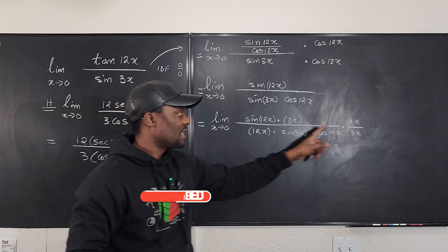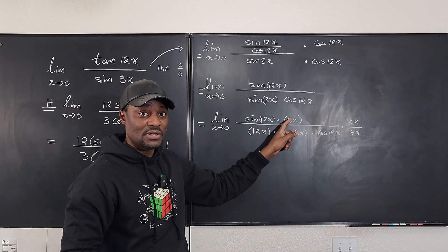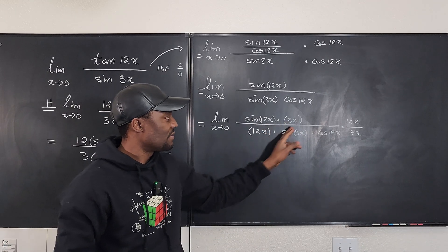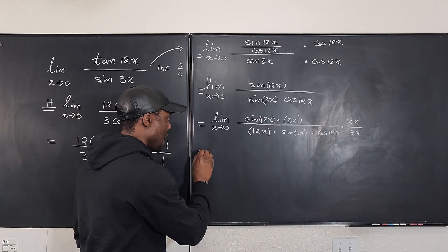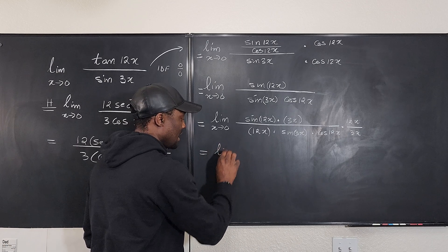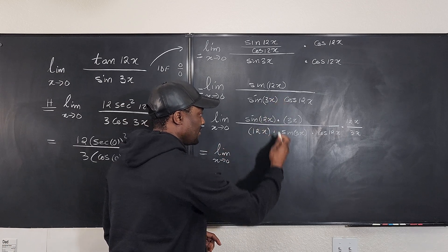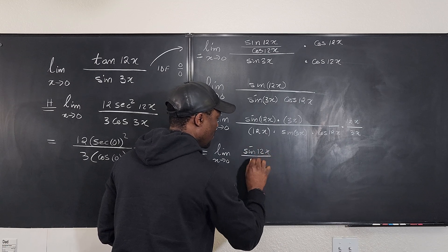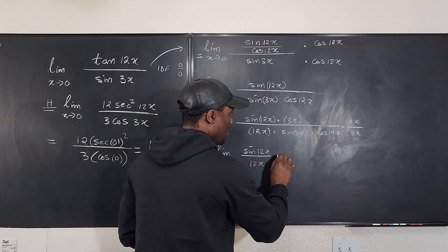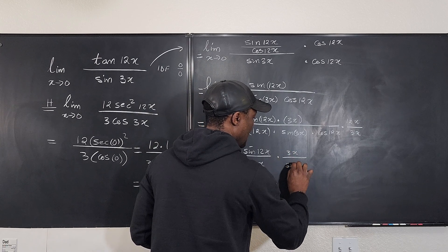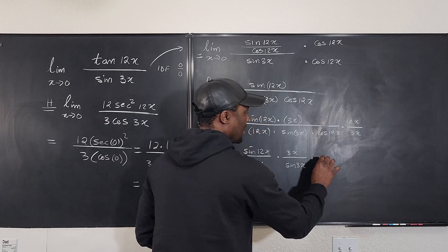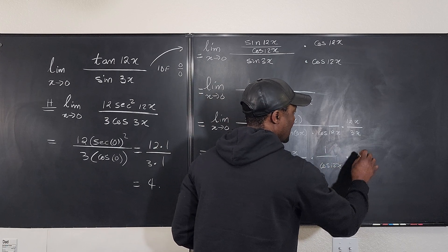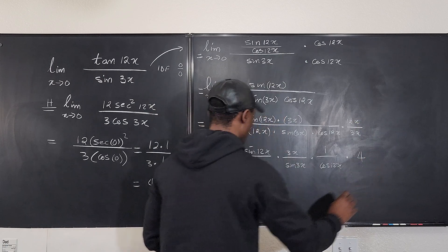So if you notice what I just did, because there was no 12x down here, you have to cancel it out. Because there was no 3x on top, you have to cancel it out, and everything else stays the same. I should have used different colors for this. So now what I have is the limit as x goes to zero of I have three different expressions: sine 12x over 12x multiplied by 3x over sine 3x multiplied by 1 over cosine 12x, multiplied by this, simplifies to 4.